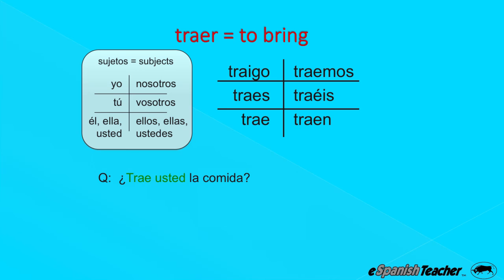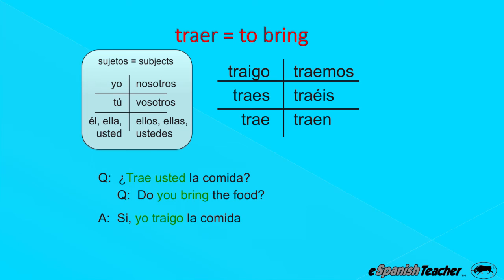I want to focus on the pronunciation of "traer" because a lot of people have a hard time with it. The AE combination is not really a combination — in Spanish every letter is pronounced. So you pronounce every letter: T-R-A-E, trae. It's just fast: trae, trae, trae.